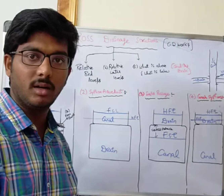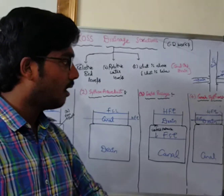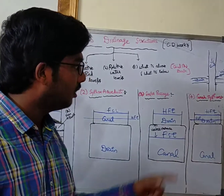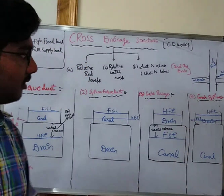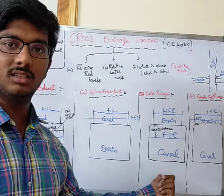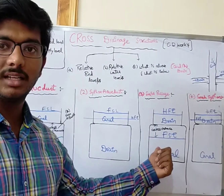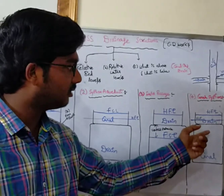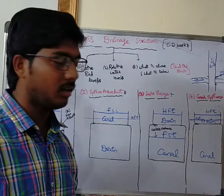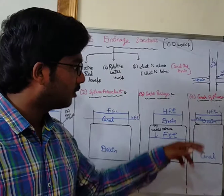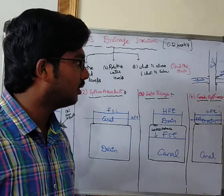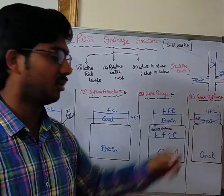In a Canal Siphon, the canal is flowing below and the drain is flowing above, but the canal's Full Supply Level (FSL) is flowing above the drain bed level. Unlike Super Passage where there is a vertical clearance between the FSL and drain bed level, in Canal Siphon there is no such freeboard — the FSL of the canal flows well above the drain bed level.